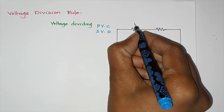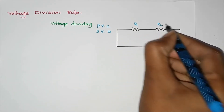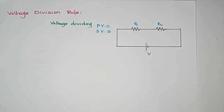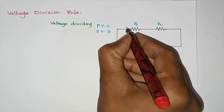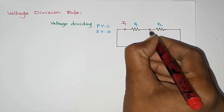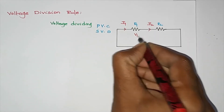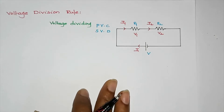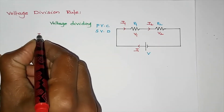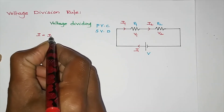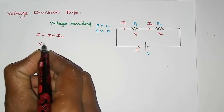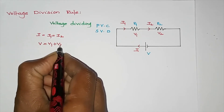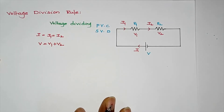If we have a series circuit with R1 and R2, when we apply voltage V, current i flows. We can see currents i1 and i2, and voltages v1 and v2. In a series circuit, the current is the same: i equals i1 equals i2. The total voltage equals v1 plus v2.